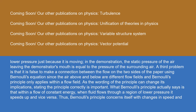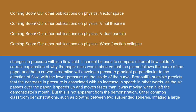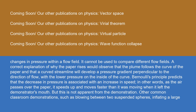Thus, Bernoulli's principle concerns itself with changes in speed and changes in pressure within a flow field — it cannot be used to compare different flow fields. A correct explanation of why the paper rises would observe that the plume follows the curve of the paper, and that a curved streamline will develop a pressure gradient perpendicular to the direction of flow, with the lower pressure on the inside of the curve. Other common classroom demonstrations, such as blowing between two suspended spheres, inflating a large bag, or suspending a ball in an airstream, are sometimes explained in a similarly misleading manner by saying faster-moving air has lower pressure.